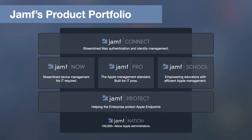We provide value beyond mobile device management, giving you the ability to seamlessly connect your users to the resources they need while protecting the devices and the data that they access. Today we're going to focus on Jamf Pro and Jamf Protect. Pro is our flagship mobile device management solution that businesses and schools rely on to deploy and configure Apple devices at scale. Jamf Protect is an endpoint protection tool built exclusively for macOS that leverages native frameworks to provide security and logging capabilities to security-conscious organizations.